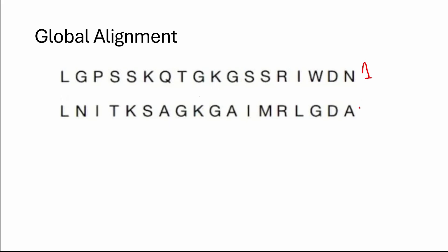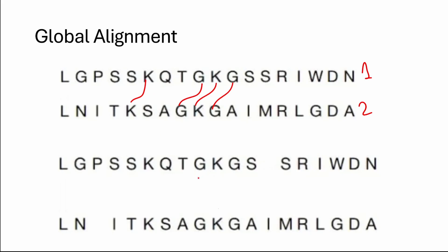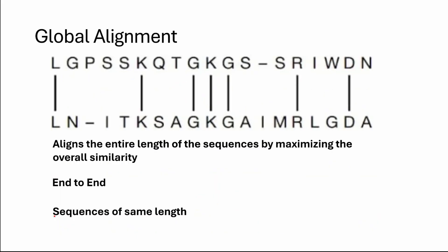Global alignment is a method of comparing two sequences which aligns the entire length of the sequences, and what we do is maximize the overall similarity. This method is commonly used when comparing sequences that are of the same length. By inserting gaps, I align the regions of similarity right on top of each other, so the sequences are aligned end to end.